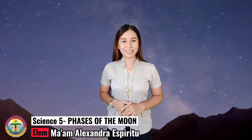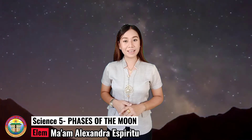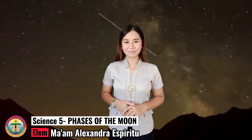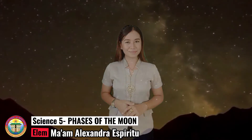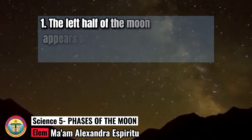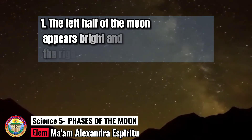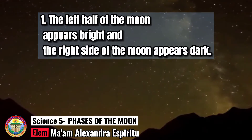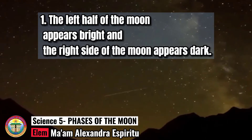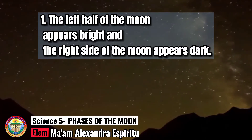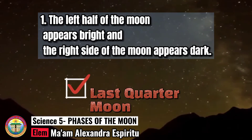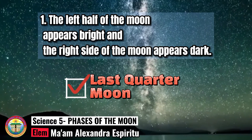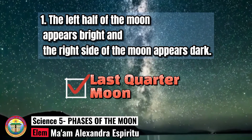Now, let us see if you can identify the phases of the Moon being described in each statement. Are you ready? Let's start! Number One: The left half of the Moon appears bright and the right side of the Moon appears dark. What phase of the Moon is this? Last Quarter Moon. If this is your answer, then you got the correct answer.